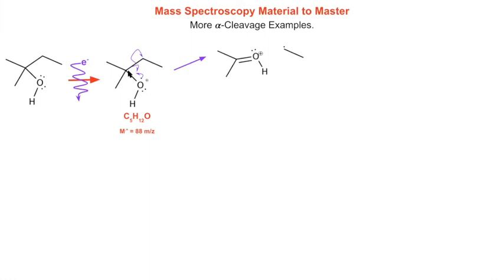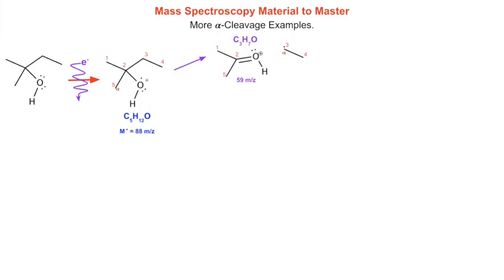This is an alpha cleavage for an alcohol. I have the carbon bearing the hydroxyl oxygen, and the carbon next to it is alpha to that alcohol carbon. Cleaving there gives a charged C3H7O fragment at m/z 59. Then I can do another alpha cleavage, cleaving off a methyl instead of the ethyl, giving a fragment at m/z 73.